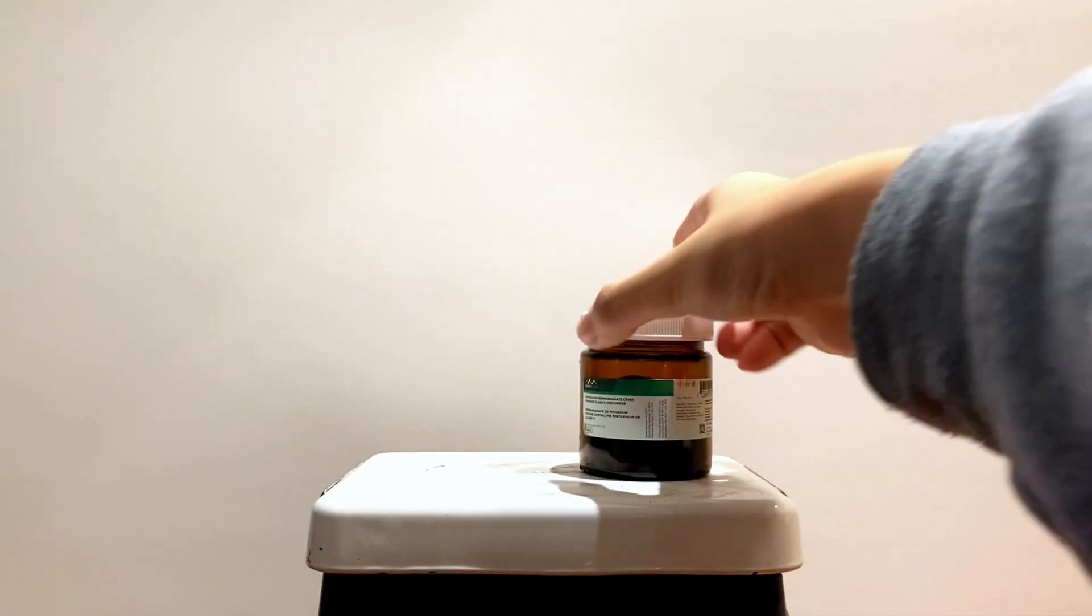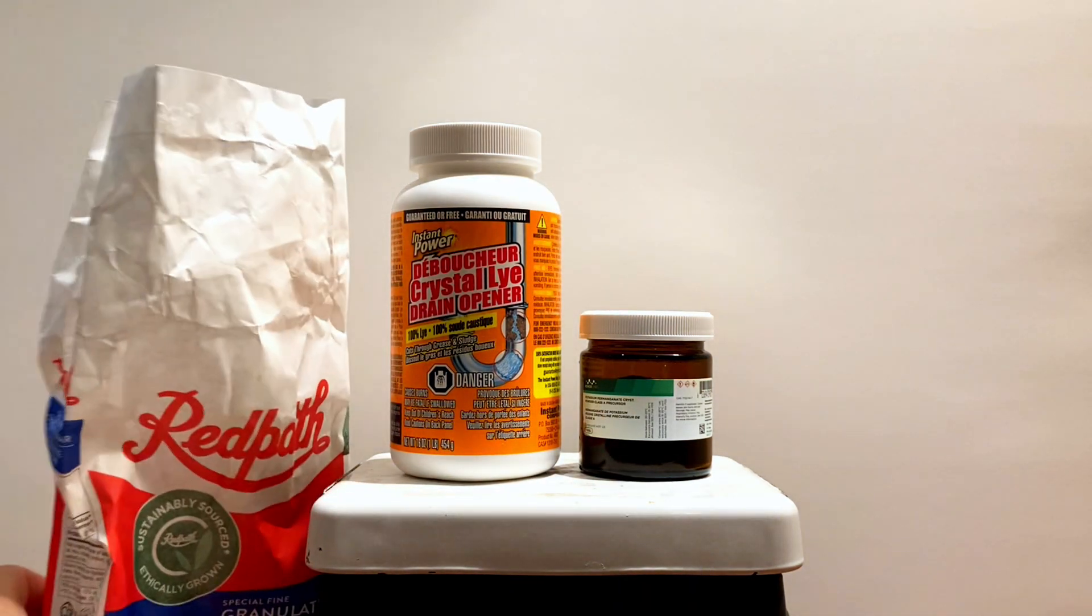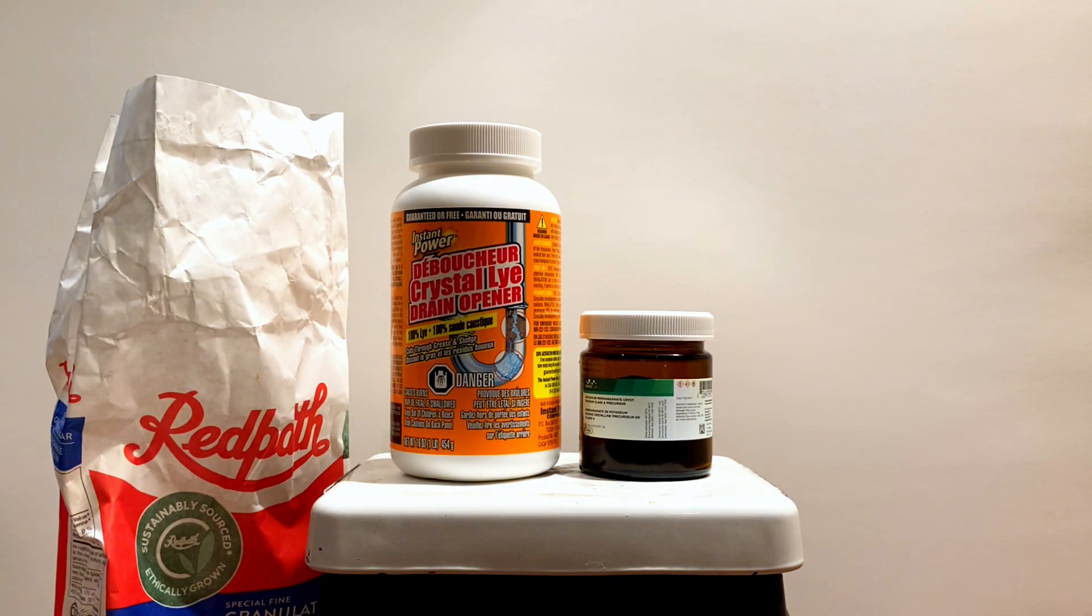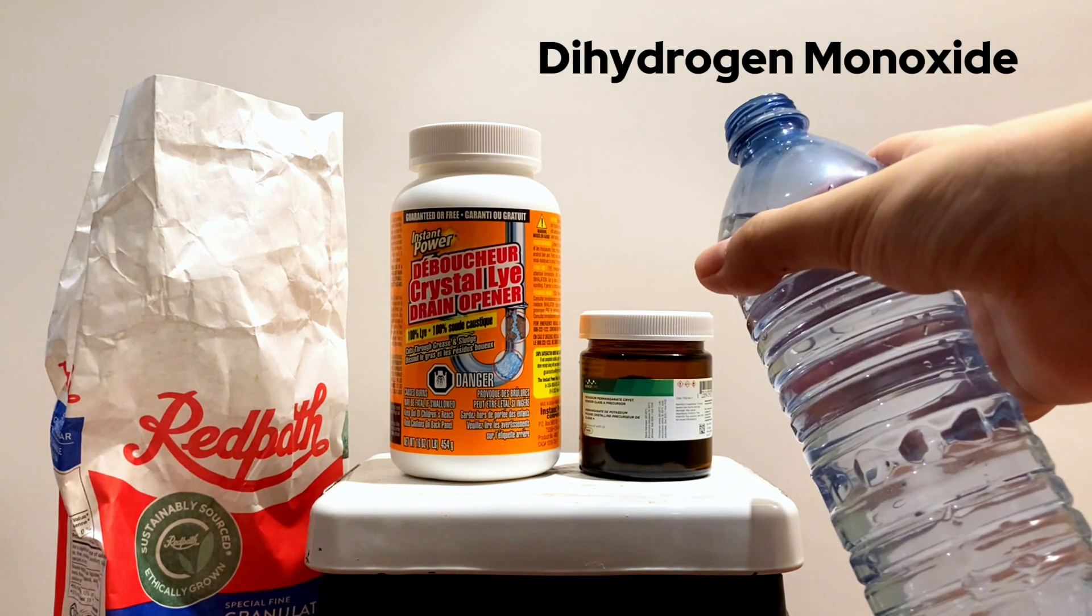So, let's get to the fun part. Now, in order to do this reaction, it is actually surprisingly simple, and all you'll need is three chemicals: potassium permanganate, glucose aka sugar, and sodium hydroxide. Oh yeah, and of course, dihydrogen monoxide, which will be our polar solvent.